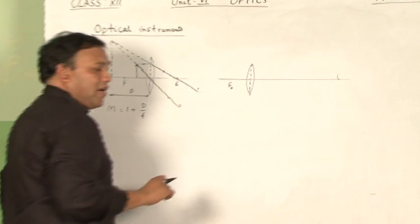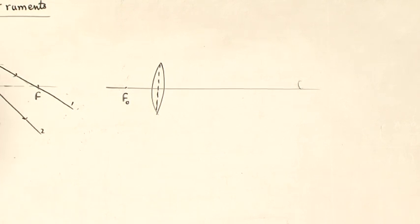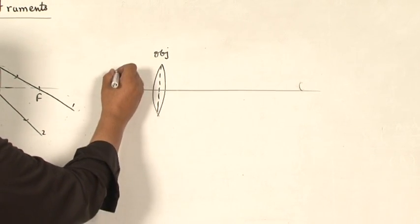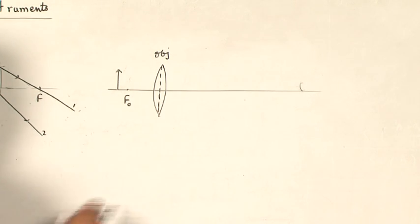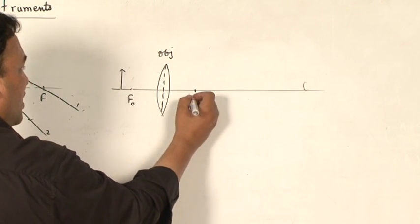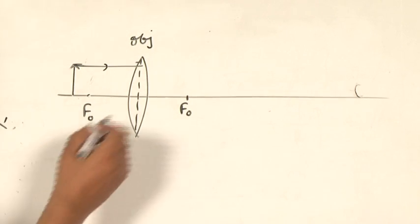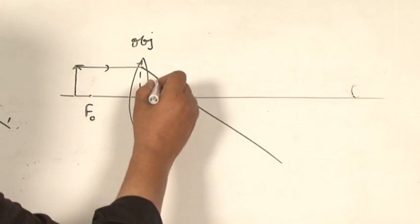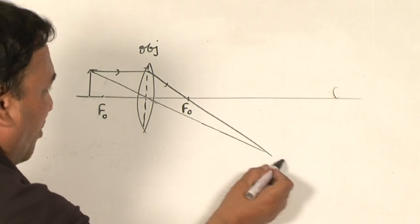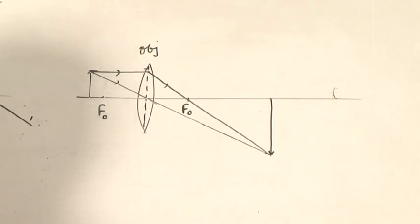This is the objective lens. When the object is placed beyond its focus, this lens forms a real and inverted image on the other side. One ray of light parallel to the principal axis, after refraction, passes through the focus. A second ray from the center of the lens goes undeviated. When these two rays meet at a point, that point is the position of the real and inverted image. This is the magnified image formed by the objective lens.